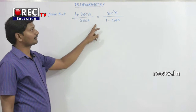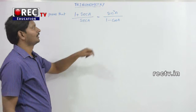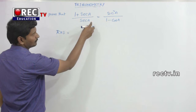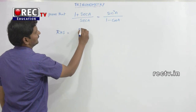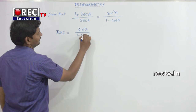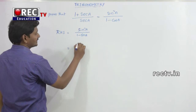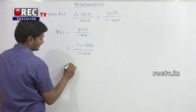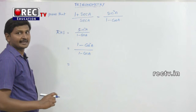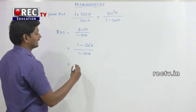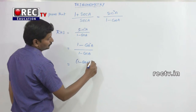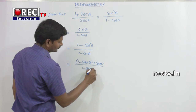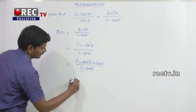The second identity to prove is: 1 plus sec(a) by sec(a) is equal to sin²(a) divided by 1 minus cos(a). Consider the RHS, which is sin²(a) divided by 1 minus cos(a). We know that sin²(a) equals 1 minus cos²(a) from the first trigonometric identity. So the numerator becomes 1 minus cos²(a), which is a difference of squares: 1 minus cos(a) into 1 plus cos(a), divided by 1 minus cos(a). The factor 1 minus cos(a) cancels, giving 1 plus cos(a).